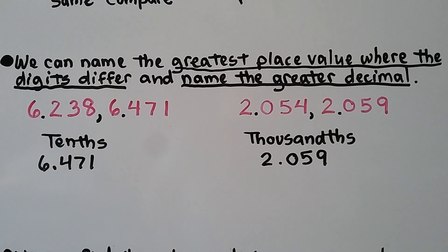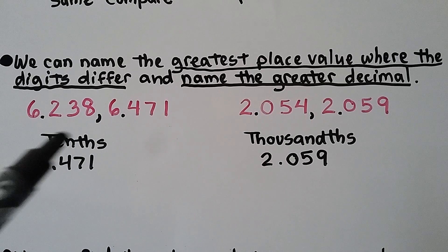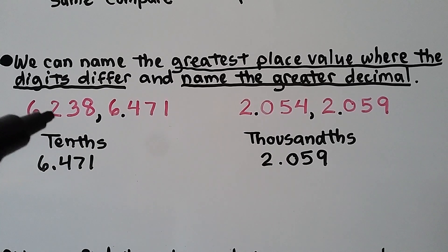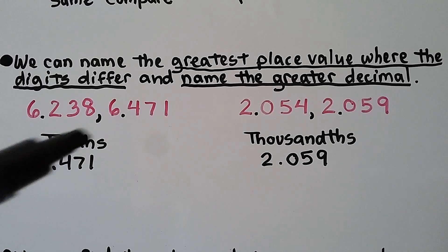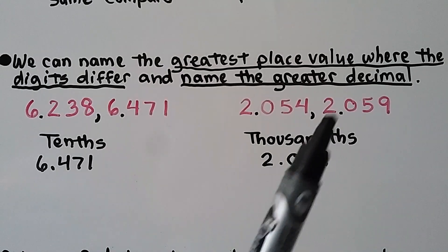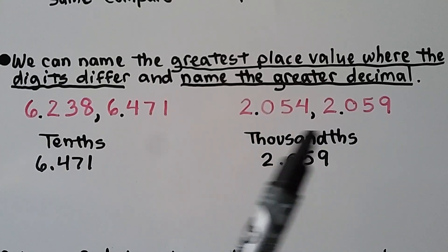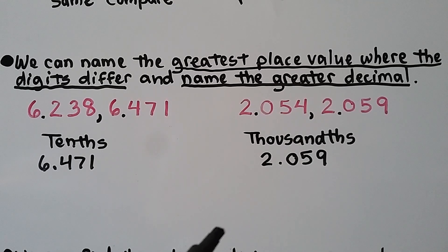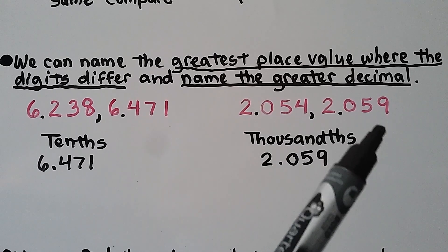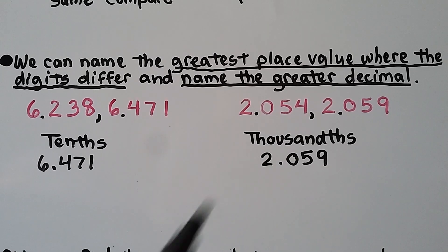We can name the greatest place value where the digits differ and identify the greater decimal. For two decimals that both have a 6 in the ones place but differ in the tenths — one has a 2 and one has a 4 — the greatest place value where the digits differ is the tenths place. For another pair, both have a 2 in the ones, a 0 in the tenths, and a 5 in the hundredths, so the greatest place value where they differ is the thousandths place. The one with a 9 in the thousandths place is greater, so 2 and 59 thousandths is greater than 2 and 54 thousandths.